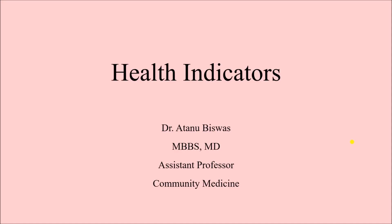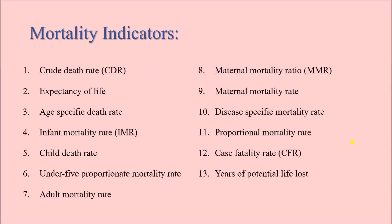We shall continue our discussion on health indicators. Today we will talk about mortality indicators — the different indicators related to death. Here we have a list or enumeration of all the mortality indicators; there can be even more. This part is very important because people are often asked in the viva or in short notes about different mortality indicators — how to define them, how to calculate them, etc.